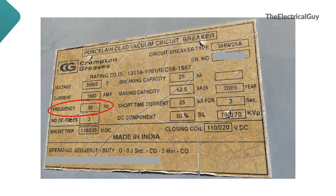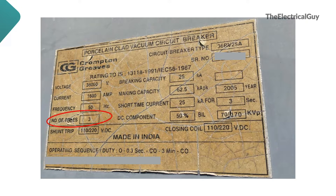Next is frequency — it is the power frequency on which electricity is generated, transmitted and distributed. In some countries it is 50 Hz and in some it is 60 Hz. Next is number of poles, which is equivalent to number of phases. On this nameplate, it is mentioned as 3.